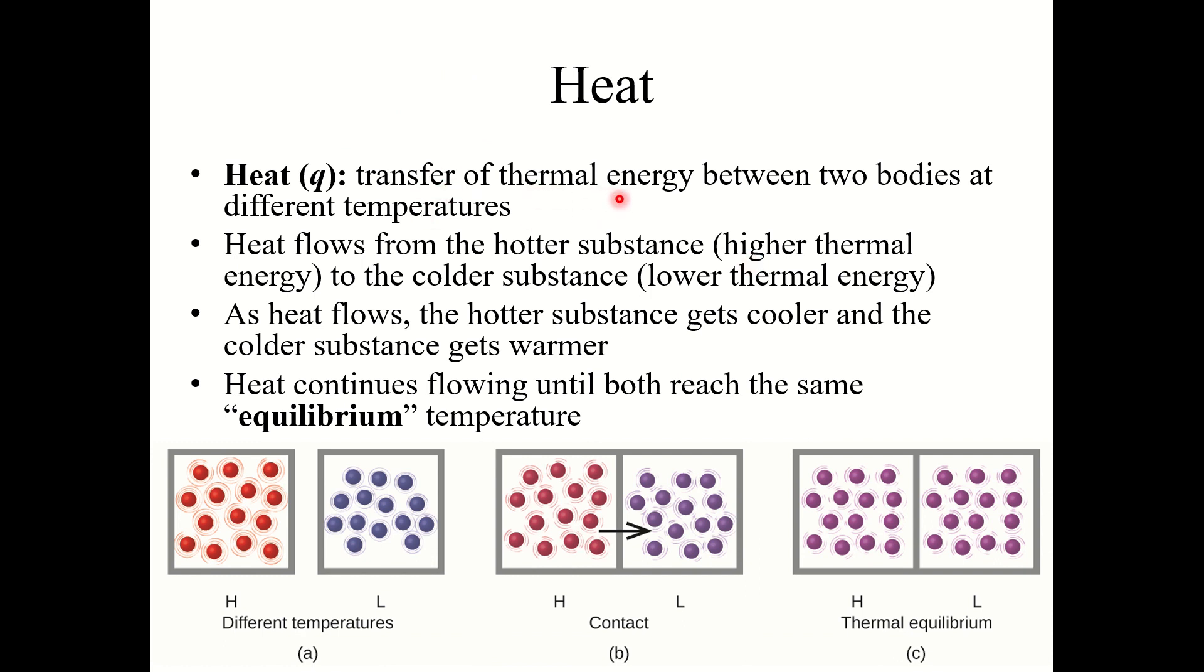Now heat flows from the hotter substances, the ones with higher thermal energy, to the colder substances, those with lower thermal energy. As heat flows, the hotter substance gets cooler and the colder substance gets warmer, and heat continues flowing until both reach the same equilibrium temperature.